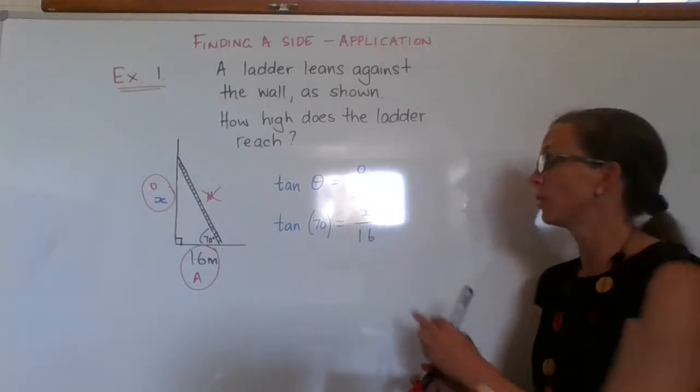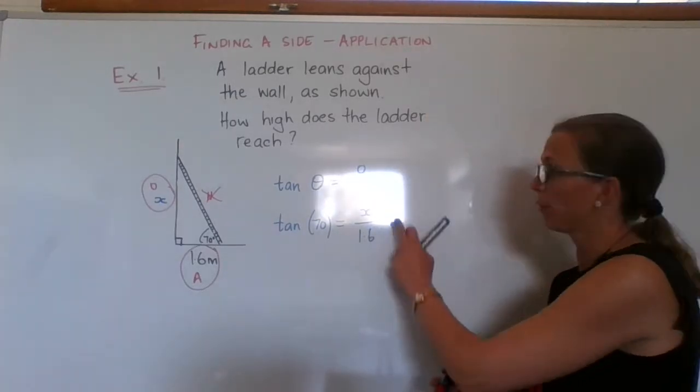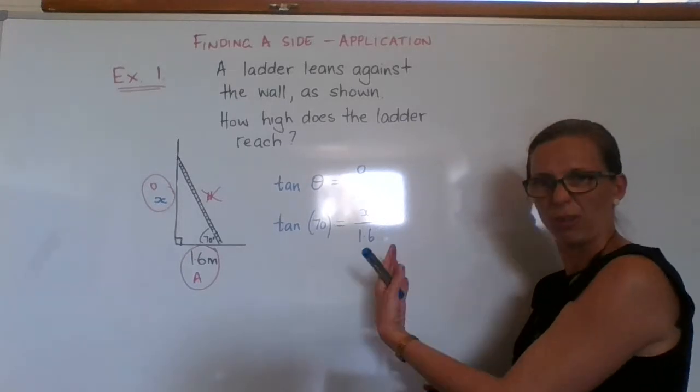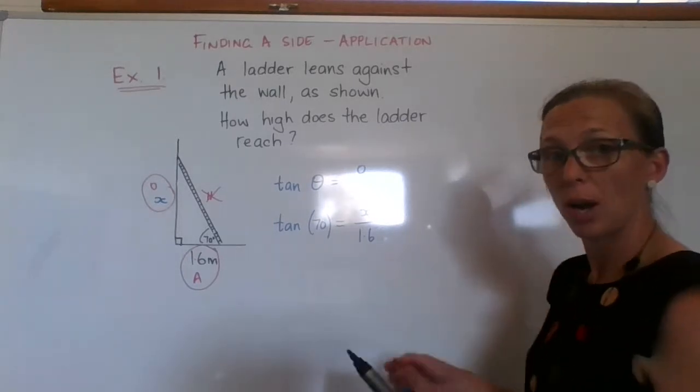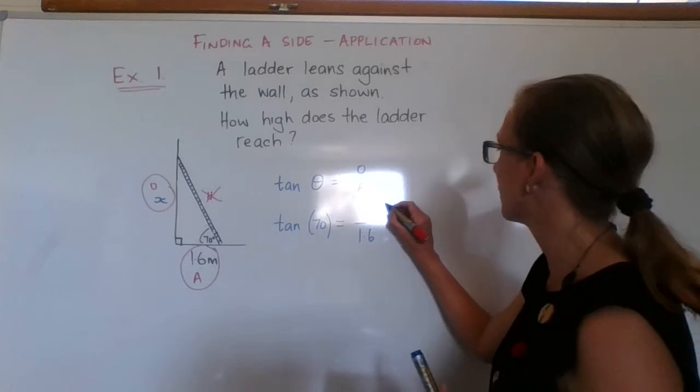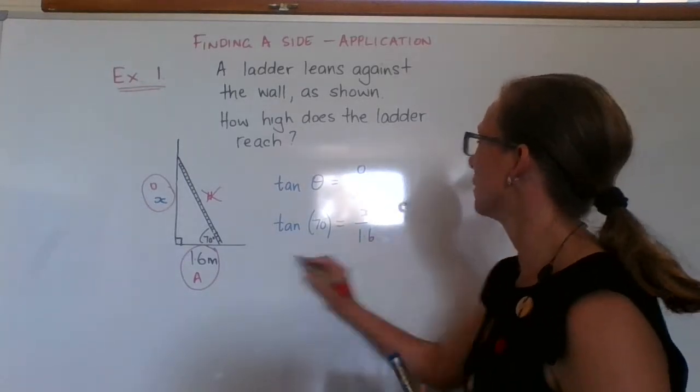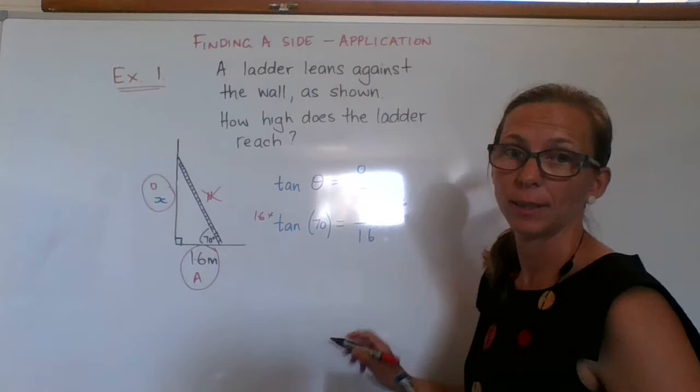Now to get that x on its own, we have to find a way to remove or get rid of this 1.6. We're going to times both sides by 1.6, times by 1.6, times it by 1.6.